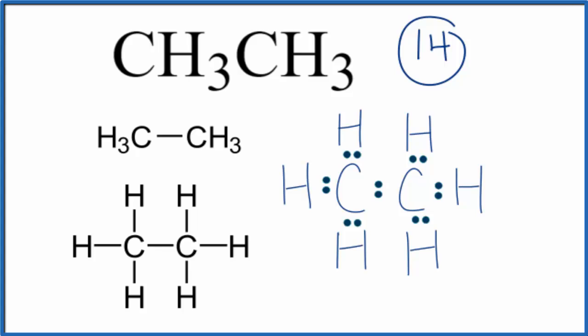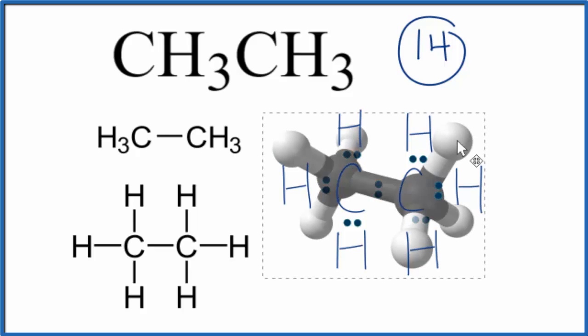If we looked at the actual molecular geometry for CH3CH3, that would look like this. The blacks, those are the carbon. You can see each carbon has 3 hydrogen atoms spread out around it.